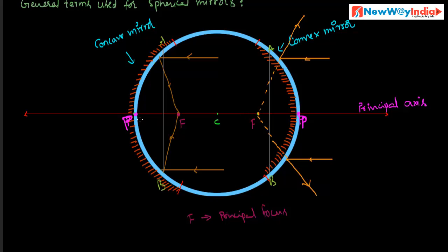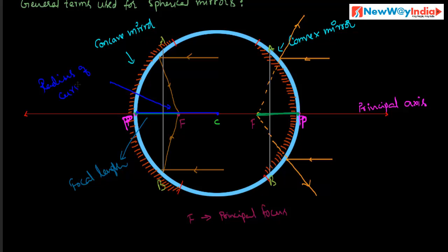Next, focal length. The linear distance between the pole and the principal focus is called focal length. It is denoted by small f. Next, the distance between the pole and the center of curvature is called radius of curvature. It is denoted by capital R.